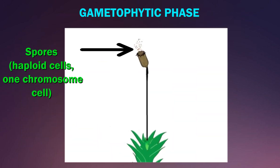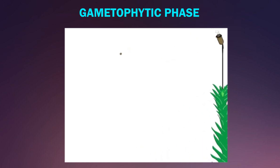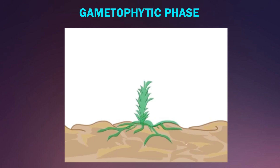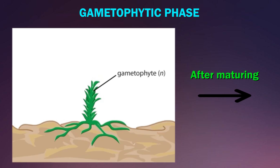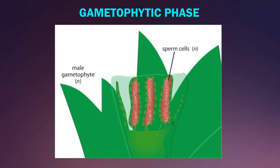Let's start the plant cycle with the gametophytic phase. Spores are haploid cells which have only one chromosome. With the formation of spores, the gametophytic phase of bryophyte starts. Spores develop into gametophyte, which is generally the leaf-like part of the plant. In the mature gametophyte, the male sex organ is the antheridium, which produces antherozoids.